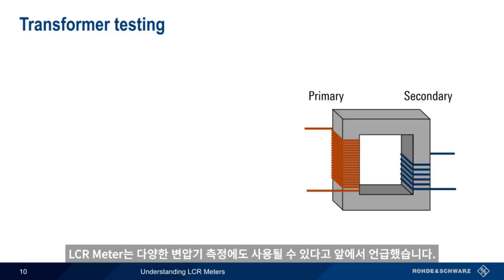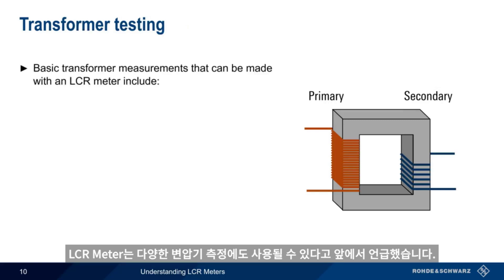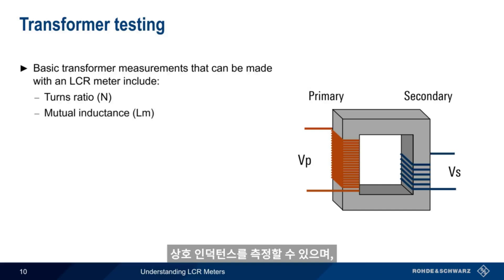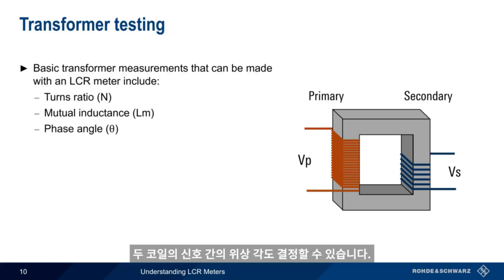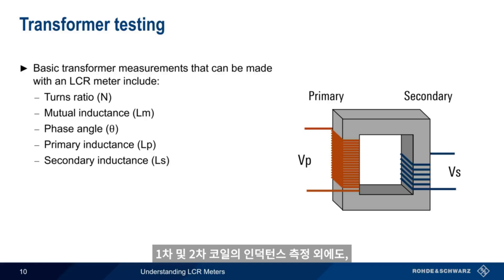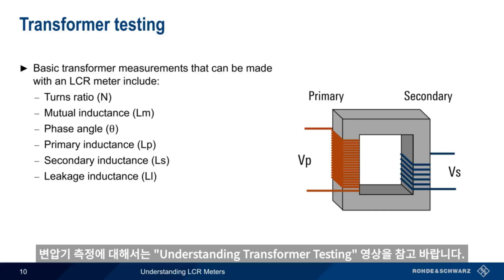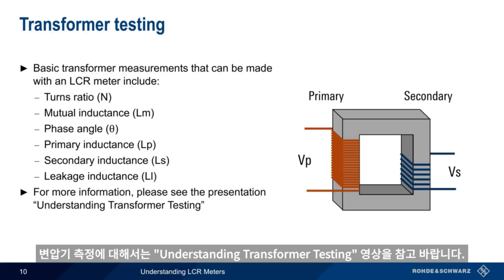LCR meters can also be used to make various transformer measurements. These include the turns ratio N, which can be calculated from the ratio of primary voltage to secondary voltage; mutual inductance, which is the change in voltage in one winding in response to a change in current in the other coil; and the phase angle between signals in the two coils. LCR meters can also find the leakage inductance, which quantifies the imperfect magnetic coupling between the two coils. Please see the separate presentation, Understanding Transformer Testing, for more details.